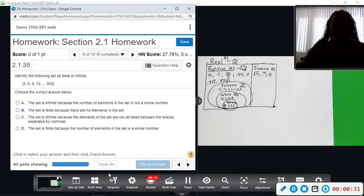In this set, we see 3, 6, 9, 12, and then we stop at 903. So since this pattern stops, we could definitely count the number of terms that are listed. So this set is finite.